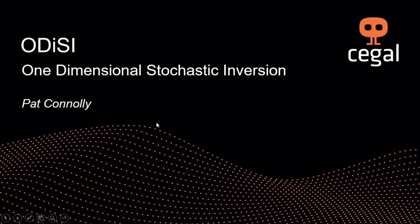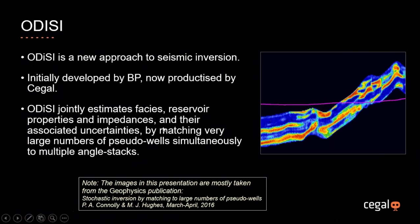Good morning or good afternoon everybody. This is Pat Connolly and I'm going to talk to you about Odyssey. Odyssey is a new approach to seismic inversion. It was initially developed by BP, and BP took the decision after the first phase of the project to commercialize it and also to fully publish it. There is a full publication available in the current edition of Geophysics. BP put the commercialization out to tender, which was won by Seagal, and the product is now available.